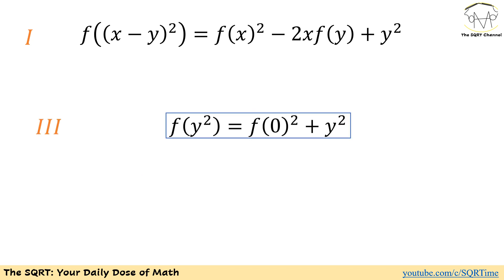The next approach is to replace x with 0 and see what we get from equation number 1. If we replace x with 0, we end up with a new equation: f of y squared equals f of 0 to the power of 2 plus y squared. Let's call this equation number 3.